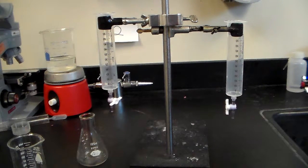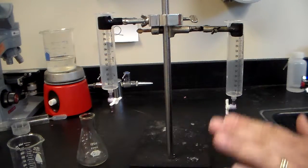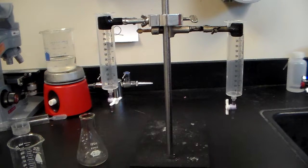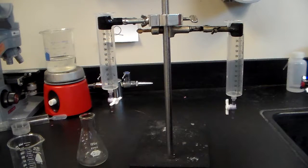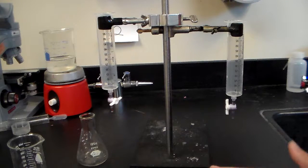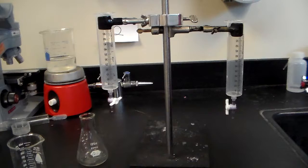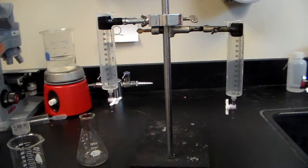To do the titration, we're looking at measuring a known solution, known concentration of an acid, and comparing it to the unknown concentration of base. We're working with a strong acid and a strong base here. We're looking at nitric acid and sodium hydroxide. Nitric acid is a strong acid, sodium hydroxide is a strong base.